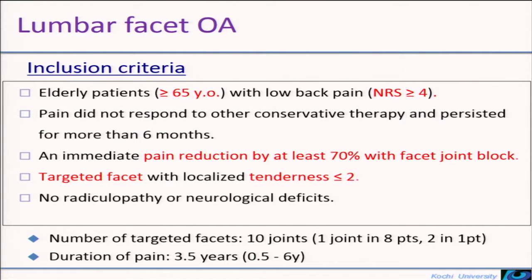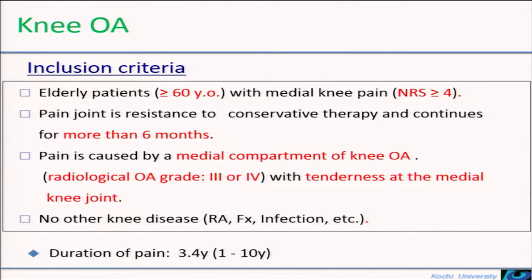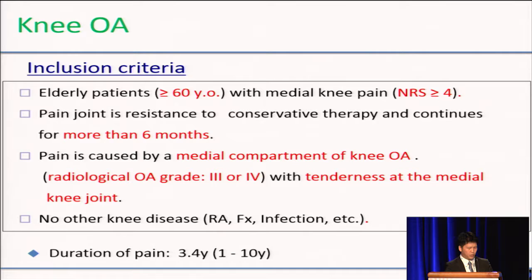For lumbar facet OA, patients were aged 65 or over and had lower back pain lasting for more than six months with no radiculopathy. We selected patients who obtained pain reduction of more than 17% by diagnostic block, and target facet joints were limited to less than two. For knee OA, patients were aged 60 or over, had knee pain associated with medial compartment of knee OA for more than six months, and could be considered for artificial joint replacement.